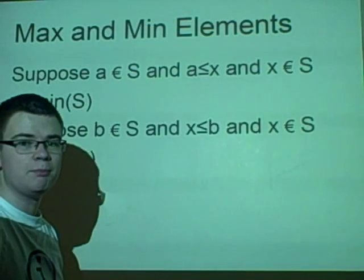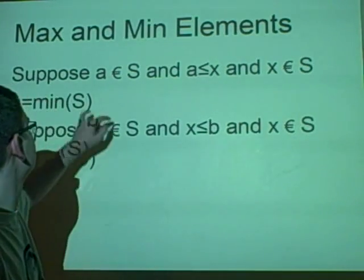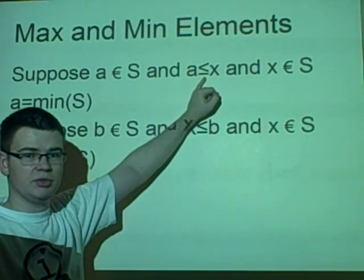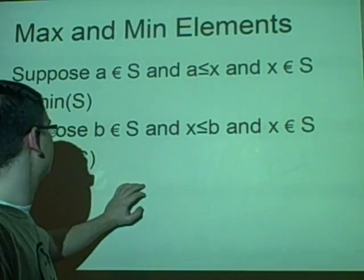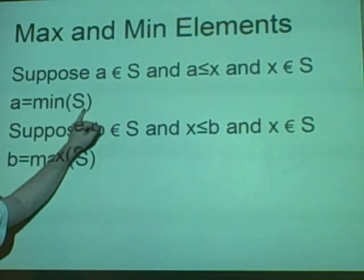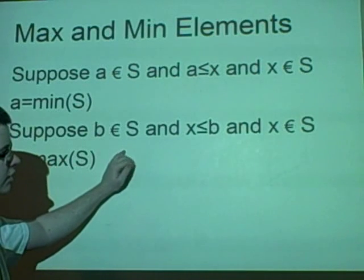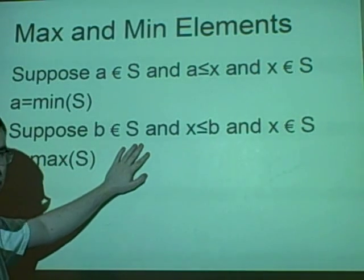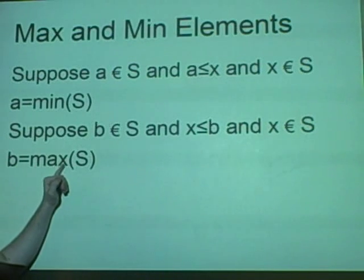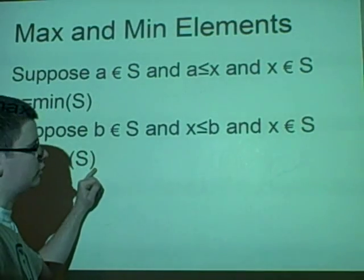A set can have a maximal and a minimal element if it is included in the set. We have A as an element of S, and if A is less than or equal to every element in S, then A is the minimal — we write min of S. Similarly for B: if B is in the set and it is greater than or equal to every number in the set, then B is the maximal — we write B equals max of S. The minimal and maximal elements are unique.